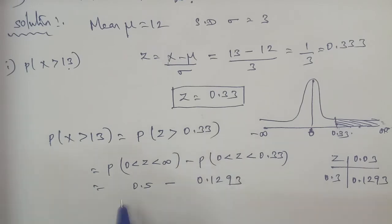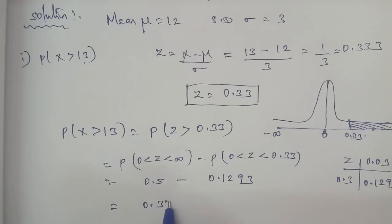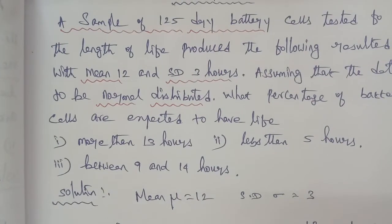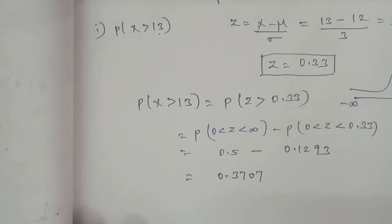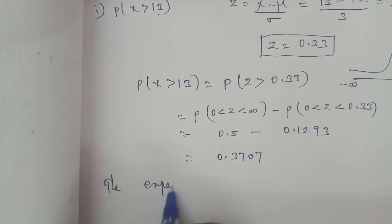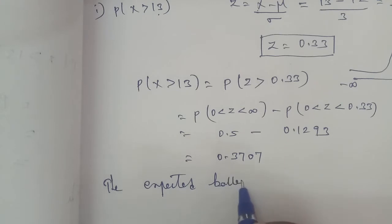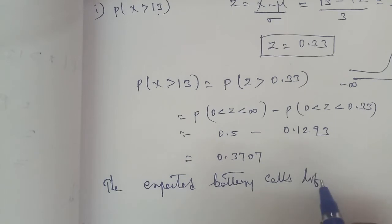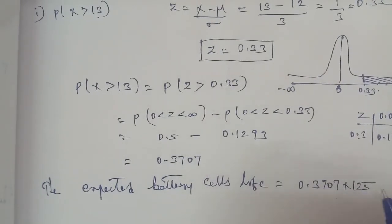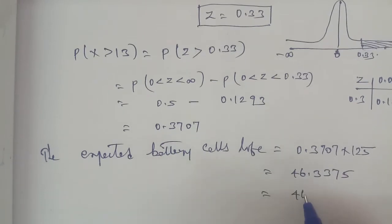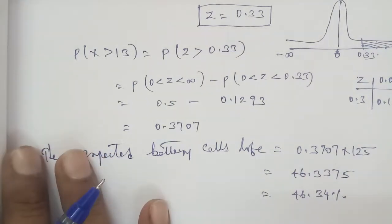The table value for Z = 0.33 is 0.1293. So P(X > 13) = 0.5 − 0.1293 = 0.3707. Total number of drive batteries is 125. Therefore, expected battery cells with life more than 13 hours = 0.3707 × 125 = 46.3375, approximately 46.34.